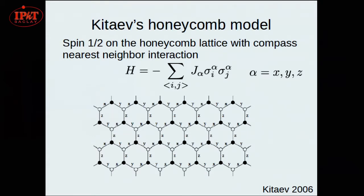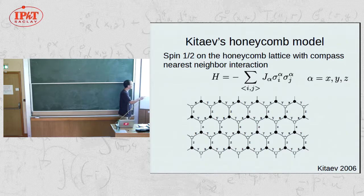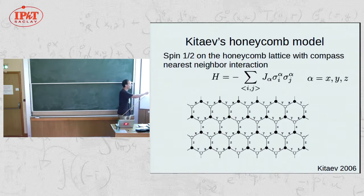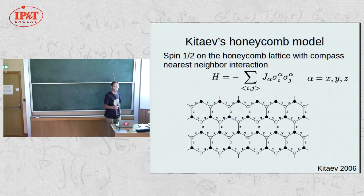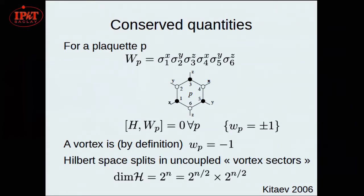The Kitaev model is a model on the honeycomb lattice with a spin-1/2 on each vertex. It has an anisotropic interaction with an Ising term on each link, where the Pauli matrices involved depend on the link type: links labeled X, Y, and Z. In principle you can play with three different exchange interactions on the three different links, though I will later restrict to the isotropic case. I first consider only this term, and later a three-spin term will play a role.